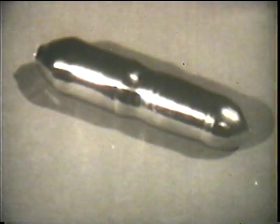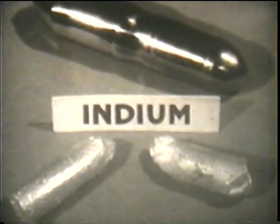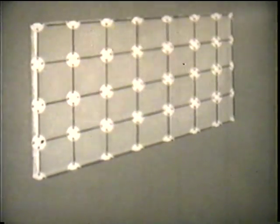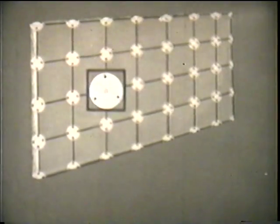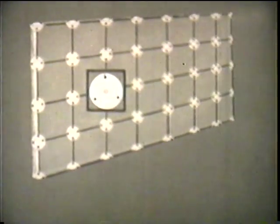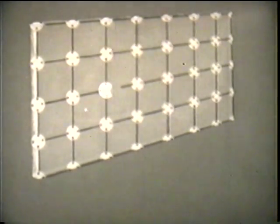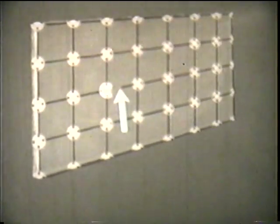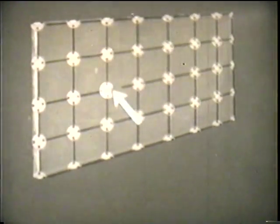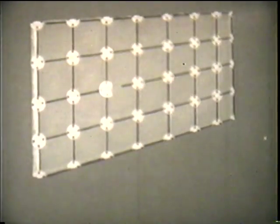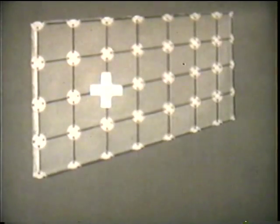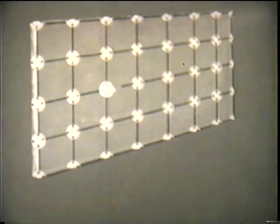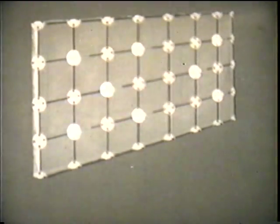There is another type of impurity which also increases the conduction of pure germanium, the metal indium. Here is the germanium lattice again. The atom of indium, as you see, has only three electrons in its outer orbit. When introduced into the germanium crystal, the three electrons form bonds with three adjacent germanium atoms, leaving a fourth bond incomplete. There will be a space left where we are short of an electron. This space behaves as though there were a localized positive charge, ready to capture an electron, and for this reason, the region is termed a positive hole.